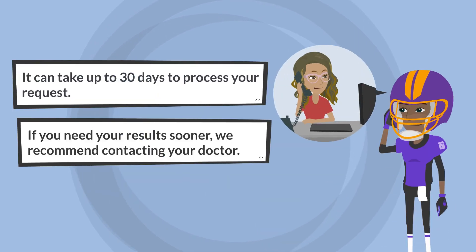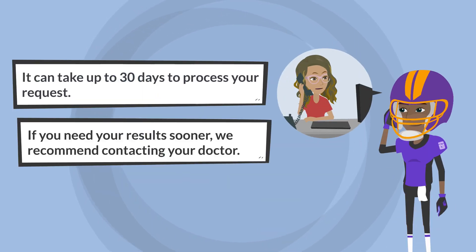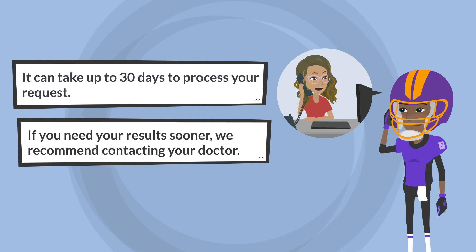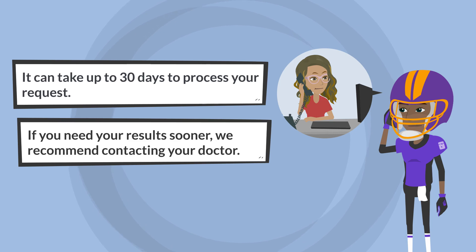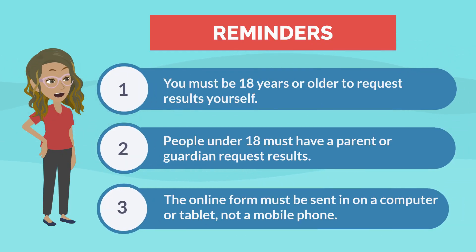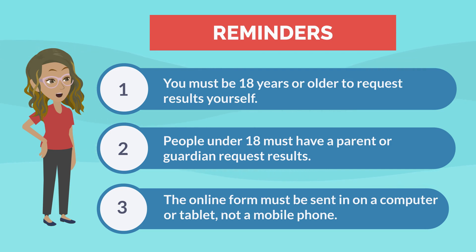Just a reminder: getting emailed results once you use the CDPH form 4400 can take up to 30 days. It might be faster to schedule an appointment with your doctor or medical provider if you can. Also, you must be 18 years or older to request results yourself. People under 18 must have a parent or guardian request results. The online form must be submitted on a computer or tablet, not a mobile phone.